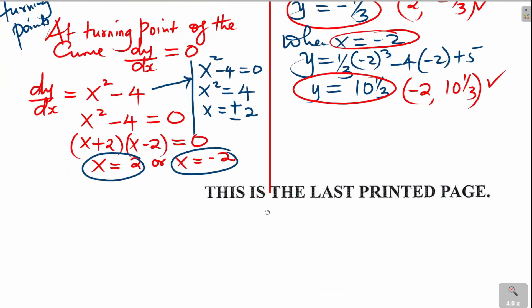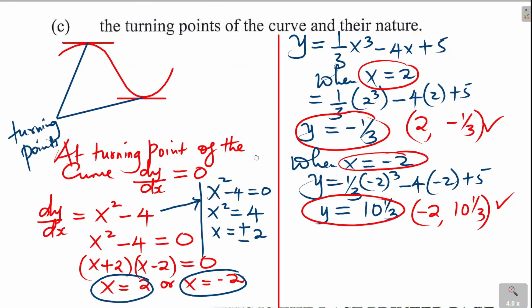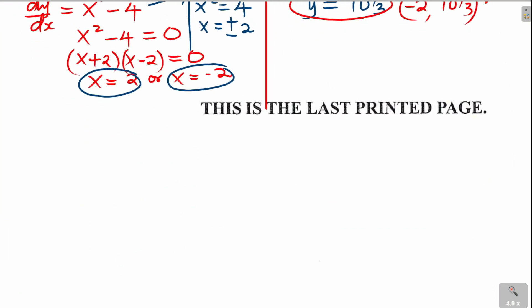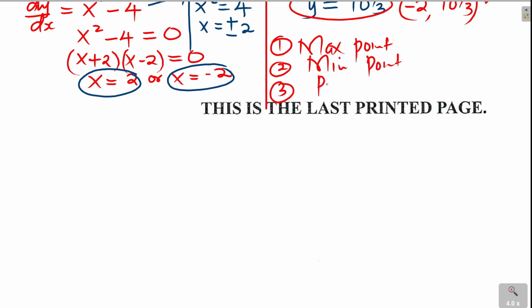Now we need to determine their nature — whether each turning point is a maximum point, a minimum point, or a point of inflection. The easiest way to determine this is to use the second derivative. A minimum point looks like a U-shape, a maximum point looks like an inverted U, and a point of inflection has an S-like shape. If the second derivative is positive, it's a minimum; if negative, it's a maximum; if zero, it's a point of inflection.